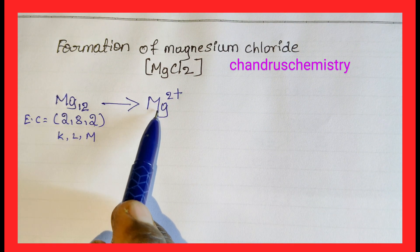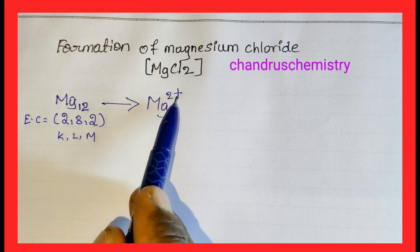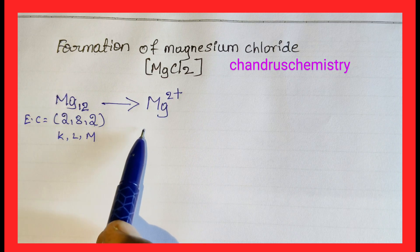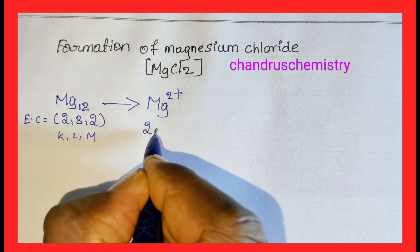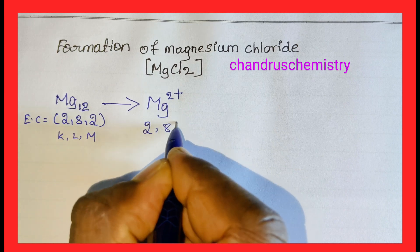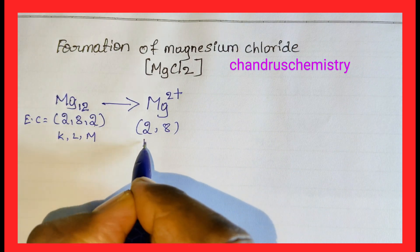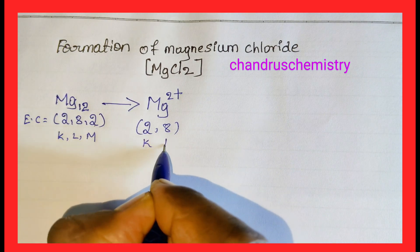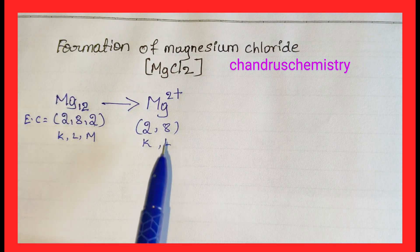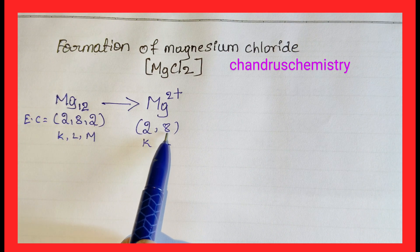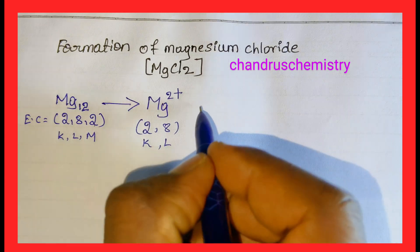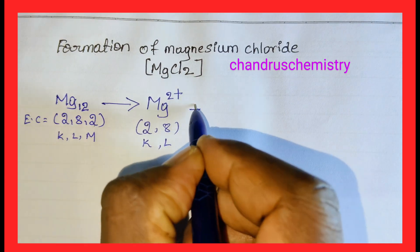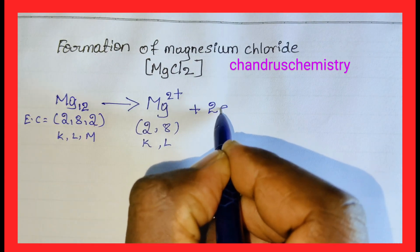Magnesium now carries a positive charge and is called the Magnesium cation. Its electronic configuration becomes 2,8 — only two shells, K shell and L shell. The L shell contains 8 electrons, satisfying the octet rule. Magnesium is now stable, having released its 2 electrons.